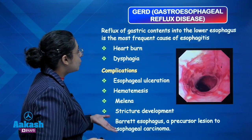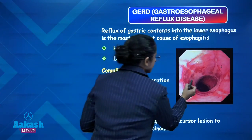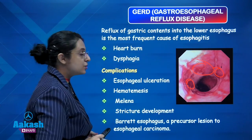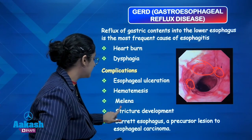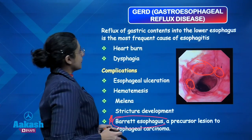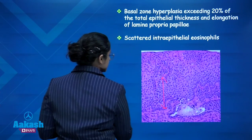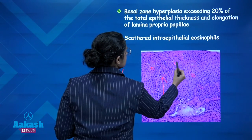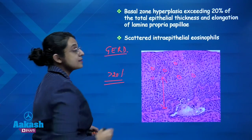GERD occurs due to chronic reflux of contents from the stomach into the lower esophagus, leading to a characteristic erythematous appearance on endoscopy. It causes heartburn and dysphagia and leads to complications such as esophageal ulceration, hematemesis, melena, stricture development, and very importantly, Barrett's esophagus. Microscopic features include basal zone hyperplasia — more than 20% of the epithelial thickness — along with scattered eosinophils. These two features are important for diagnosing GERD.